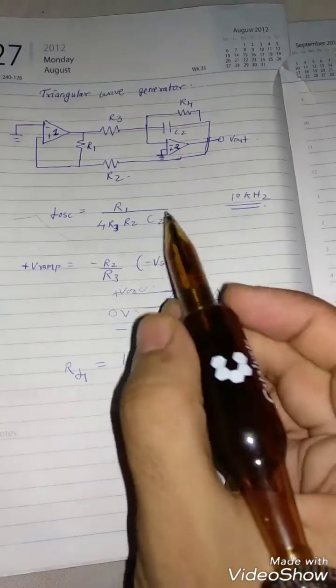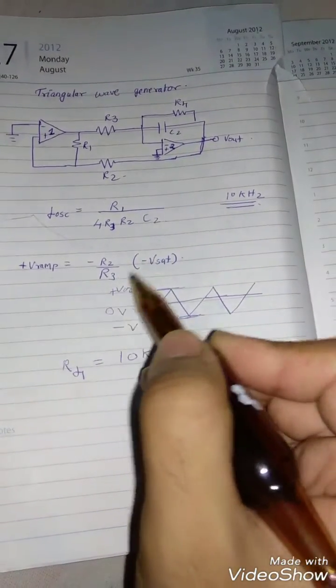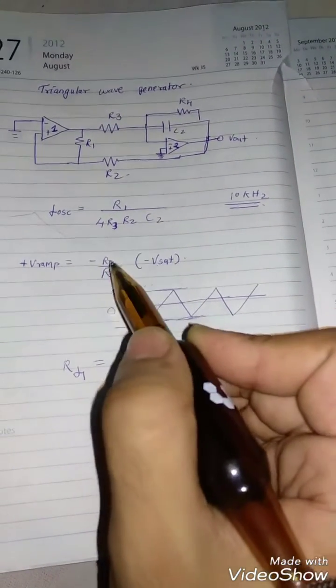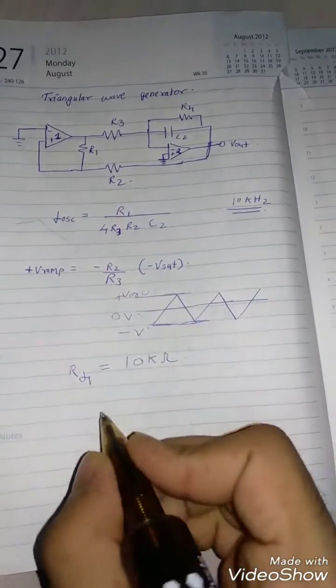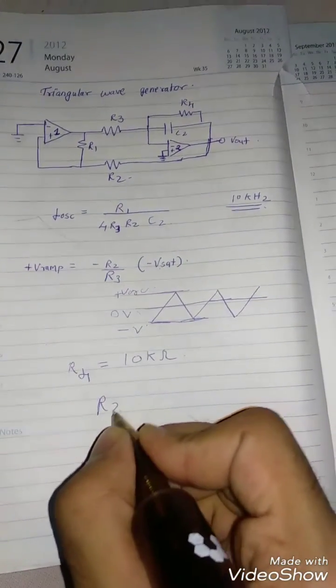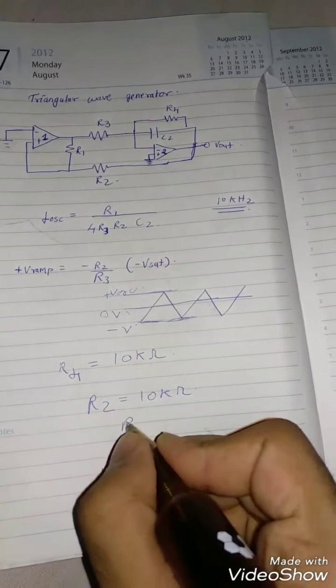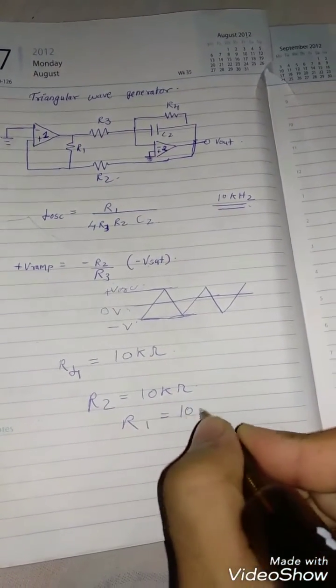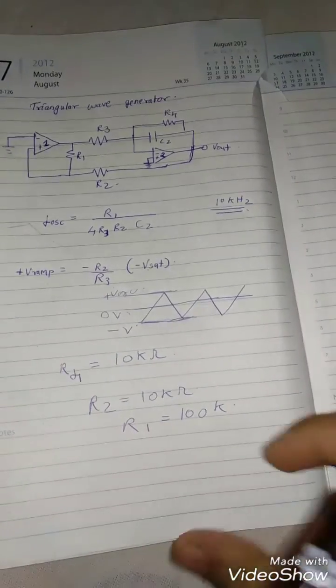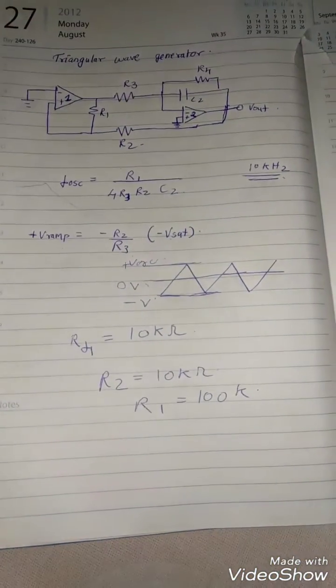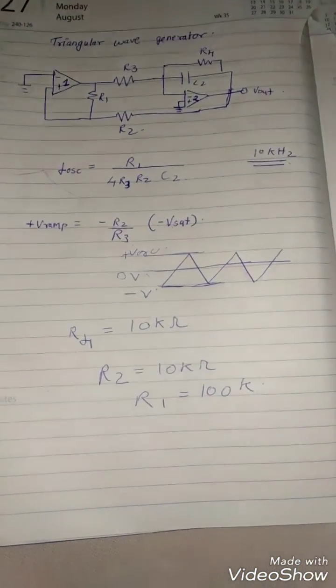So it is calculated by this formula: R2 upon R3 into Vsat. So usually we assume this R2 as 10 kilo ohms and R1 as 100 kilo ohms, or basically in that ratio 1 to 10 ratio, so that we can get a proper waveform at the output.